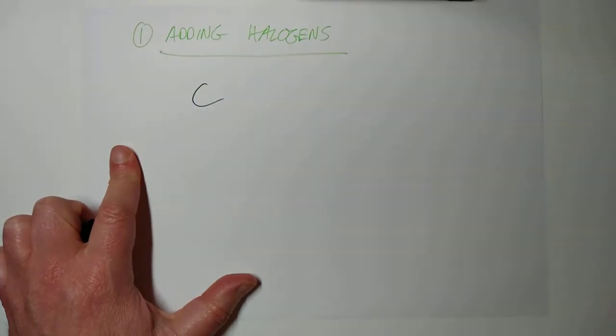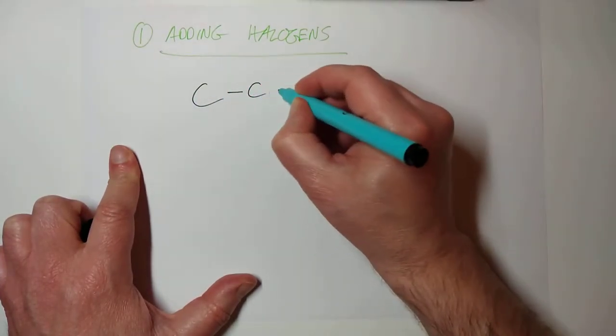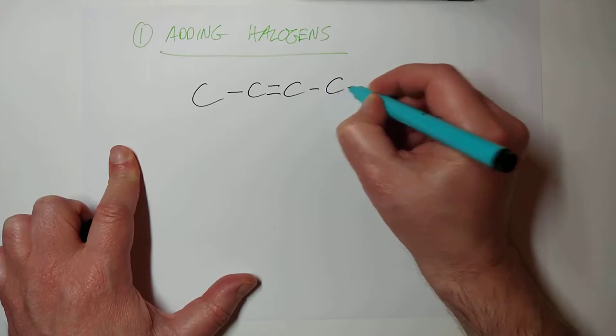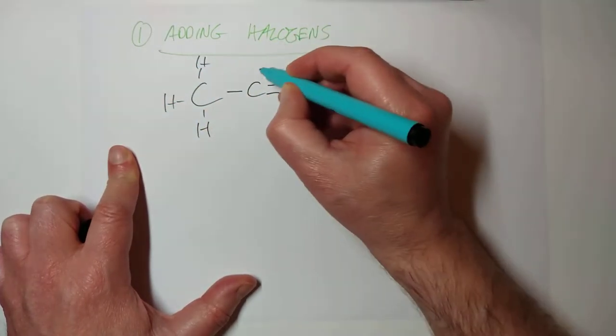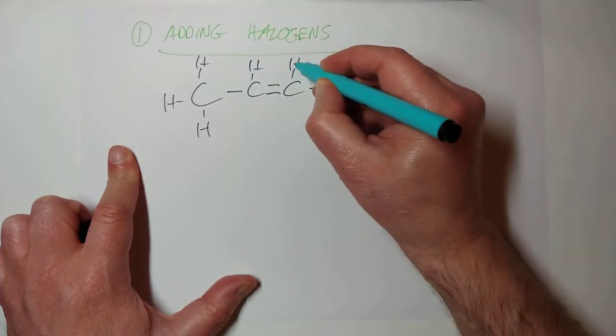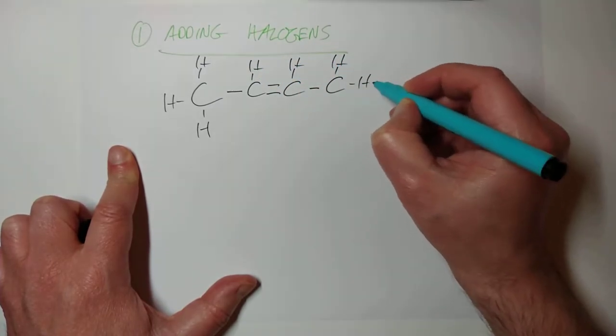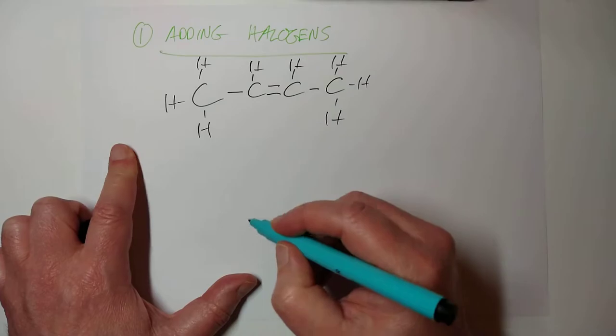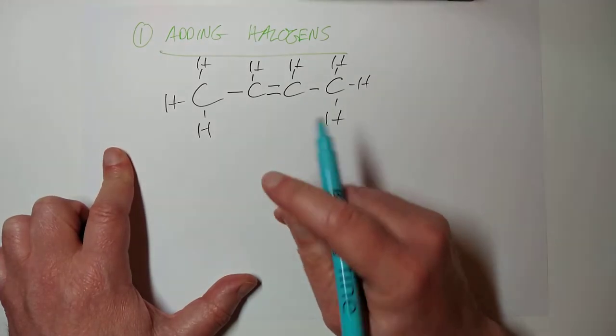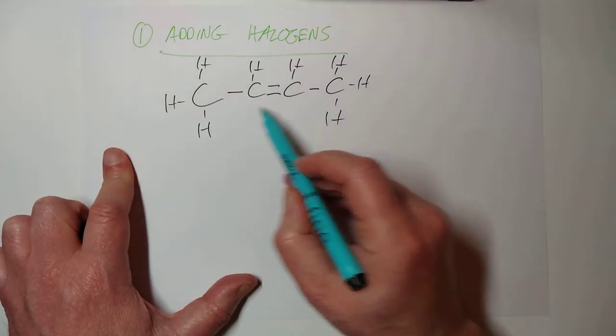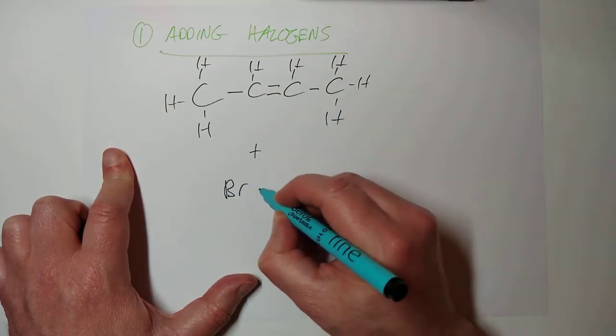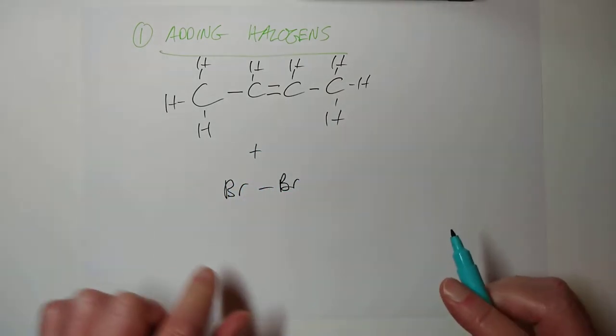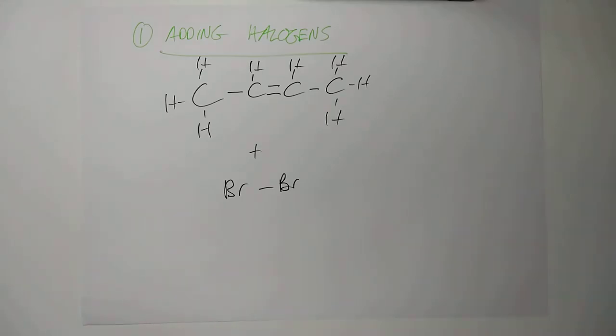So, if we start with this molecule here, which is what we had, and I'll even put the H's in because I'm feeling generous and not lazy tonight. So, there we have. This is our starting molecule, and we're reacting it with a bromine molecule. Please remember, this is actually the test for unsaturation, isn't it?